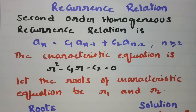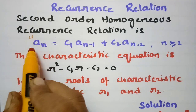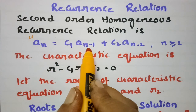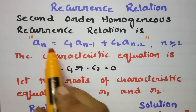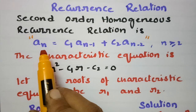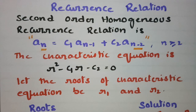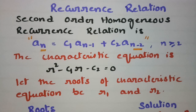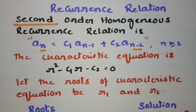This video is on second-order homogeneous recurrence relations. The second-order homogeneous recurrence relation is An = C1·An-1 + C2·An-2. The order equals the difference between the greatest subscript and the least subscript. Here the greatest subscript is N and the least is N-2, so N - (N-2) = 2, making this a second-order homogeneous recurrence relation.